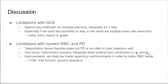There are some limitations with GCS — it seems very inefficient for footstep planning, especially for forefeet, particularly if we want the possibility to step in the same set multiple times with the same foot, which adds many copies to the graph. There are also limitations with current full-body control and PD: teleportation shows feasible steps, but PD is not able to track the trajectory well. One issue is that optimization becomes infeasible when adding hard constraints on Q0 and QN-1. Improvements can likely be made regarding costs and constraints to make full-body control better. Thank you for listening, and thank you to the underactuated staff for their support.